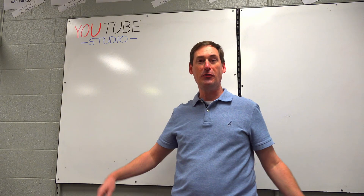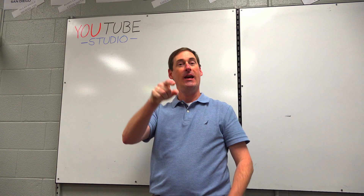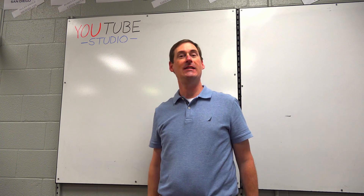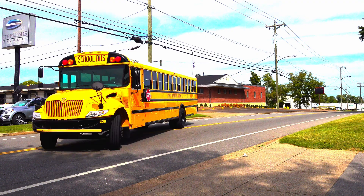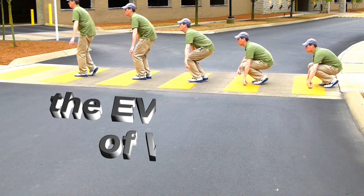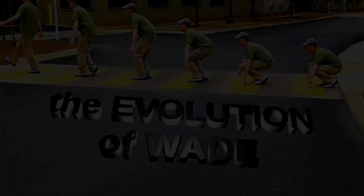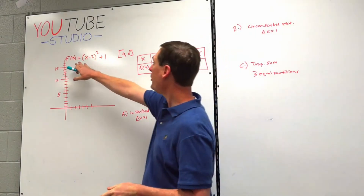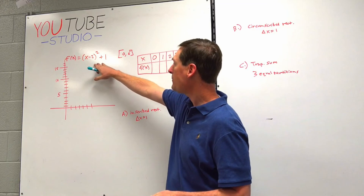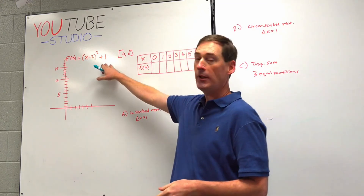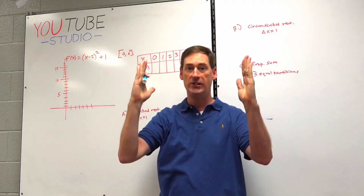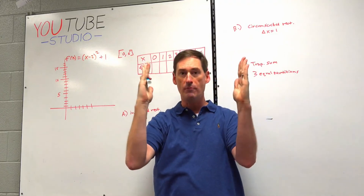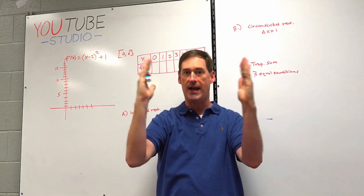Calculus students, it's time to get into chapter 6. Here comes 6-1. f of x equals x minus 2 quantity squared plus 1, on the domain from 0 to 6 on the x-axis — a closed interval.